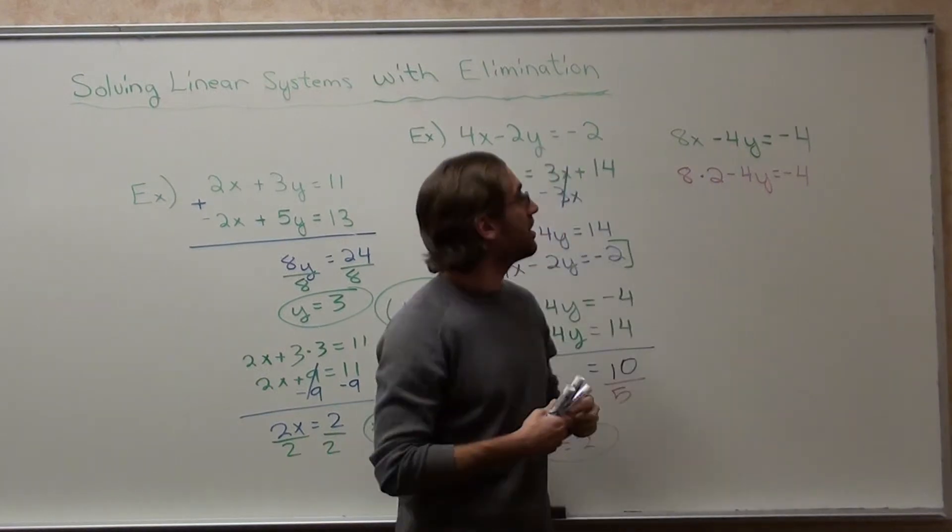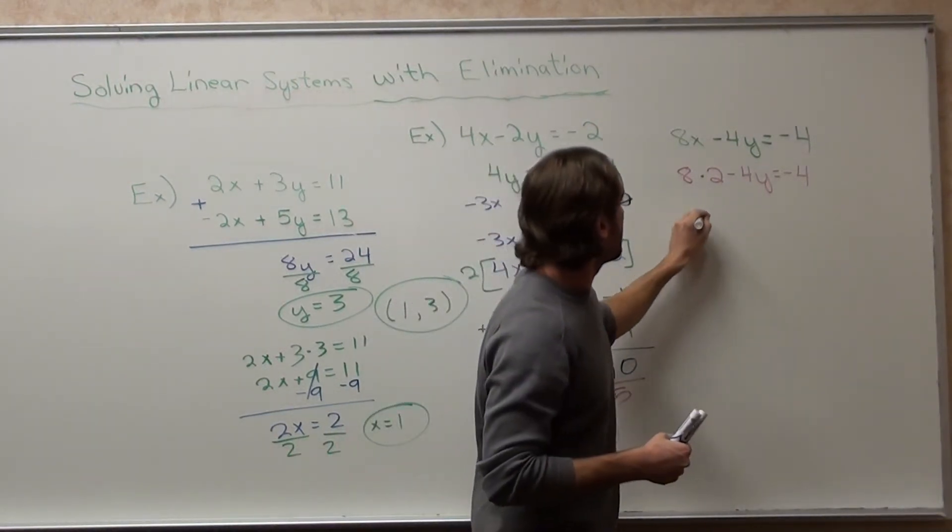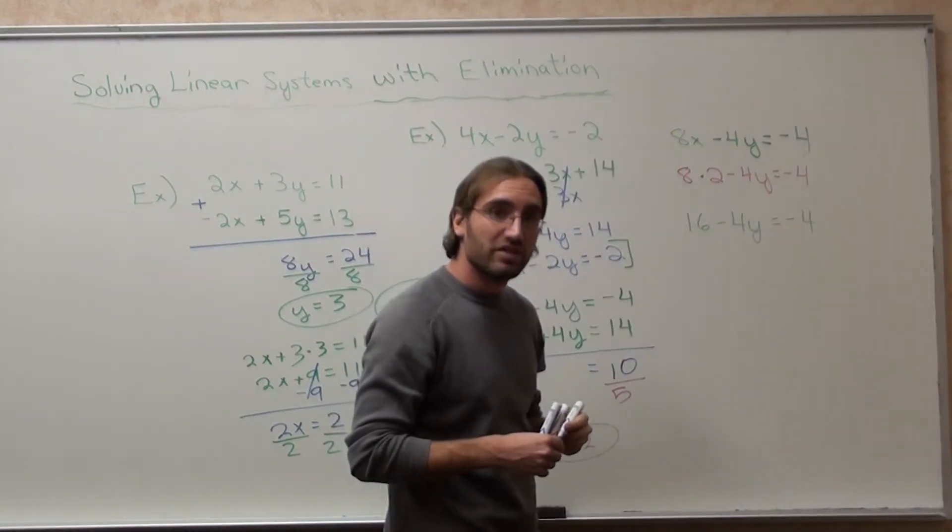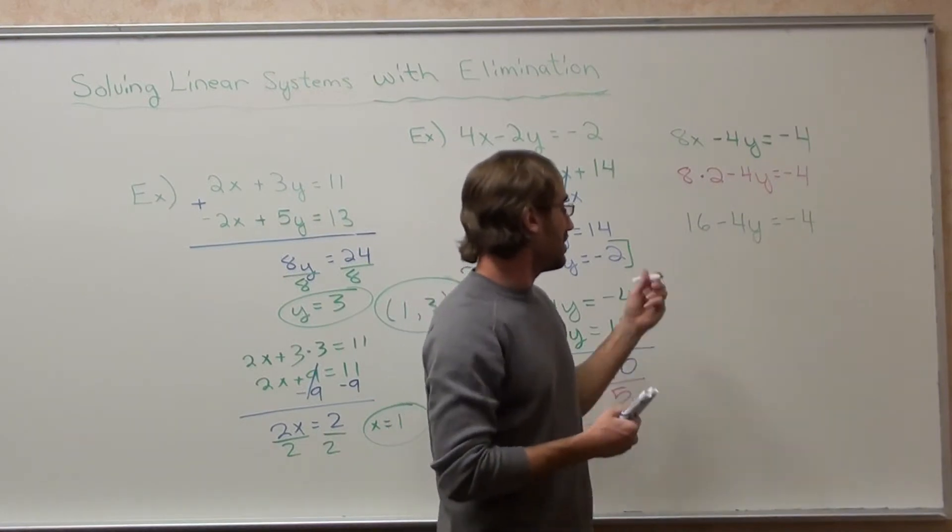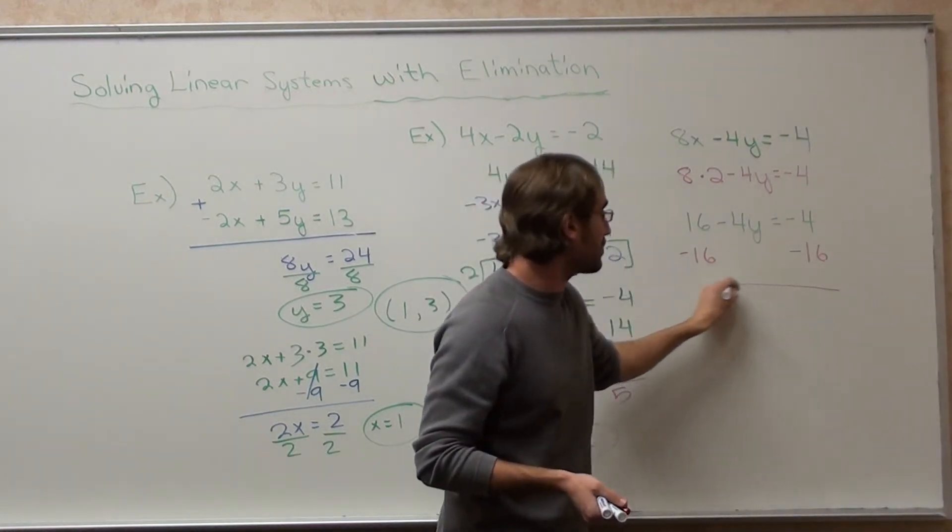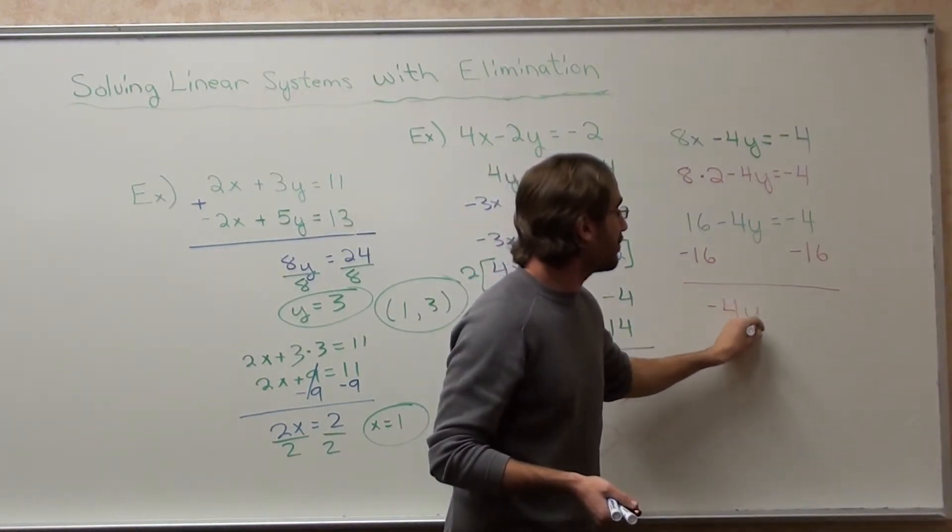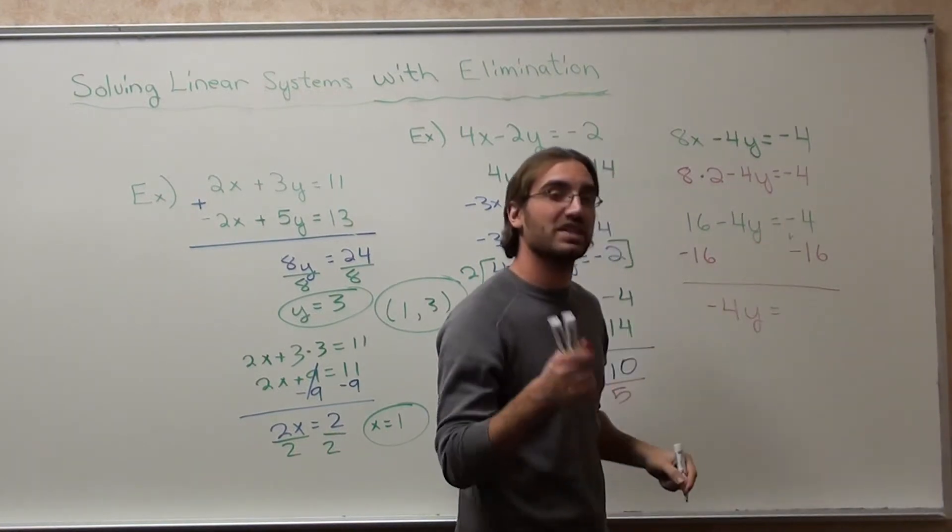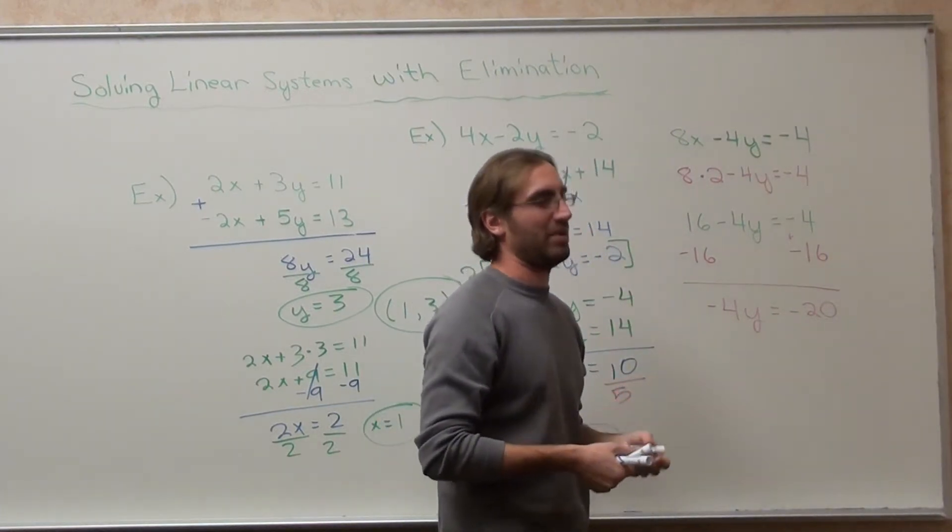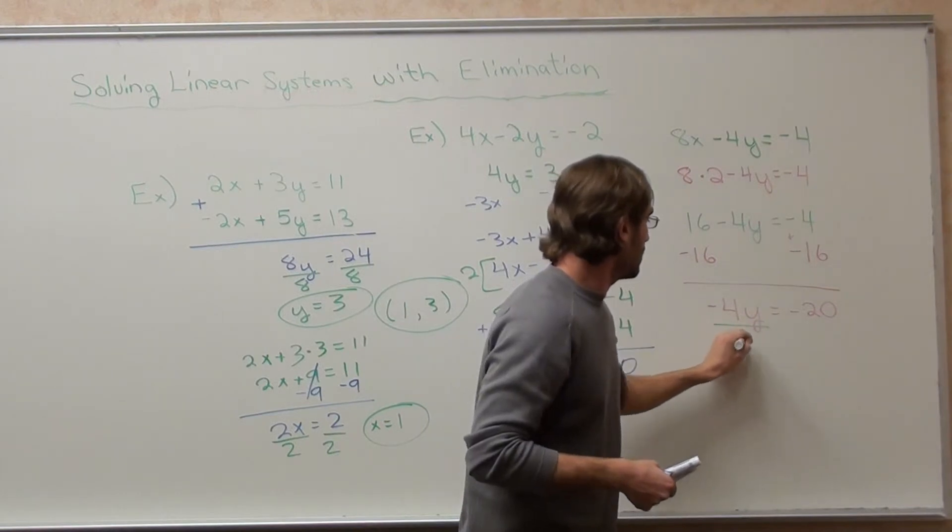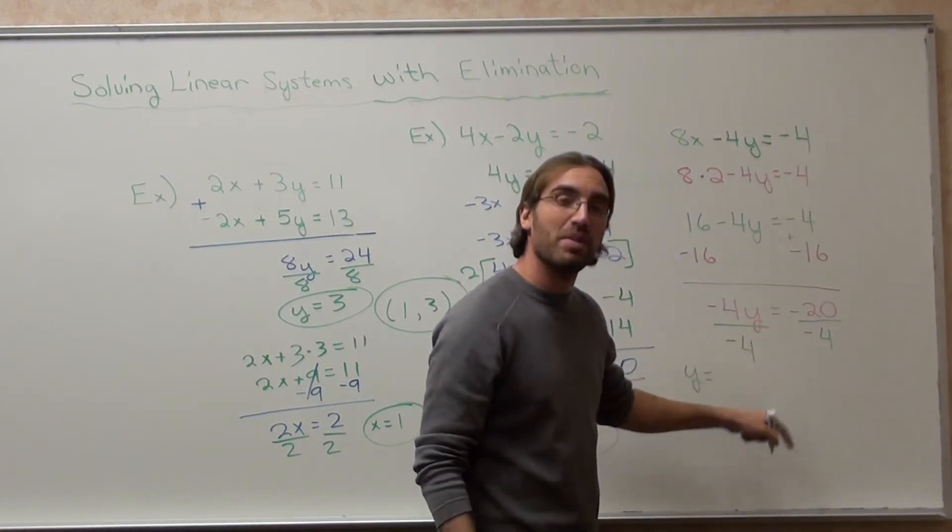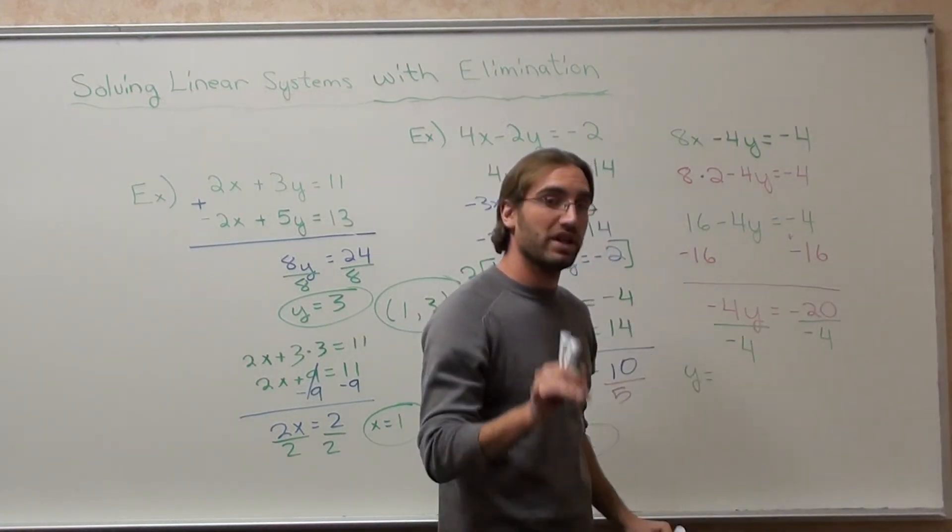8 times 2 minus 4y equals negative 4. 16 minus 4y equals negative 4. Subtract 16 on both sides, and here's where I'll actually have students make a mistake. Negative 4y equals negative 4 plus negative 16 is negative 20. A lot of times I'll get negative 12. And then the student does all that work, messes up, and I have to take a point off. Divide by negative 4 on both sides. y equals negative divided by negative is a positive. 20 divided by 4 is 5.